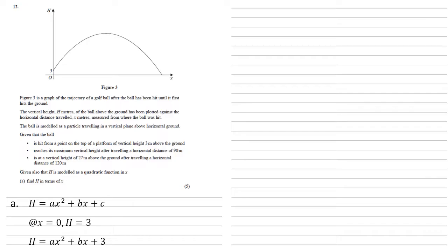We can now use our second bullet point. It's a maximum vertical height at a horizontal distance of 90 metres, but at the maximum vertical height, dh by dx must be equal to 0, so if we differentiate h, we get 2ax plus b. This must be equal to 0 when x is 90, so substituting 90 in, we get that 0 equals 180a plus b.